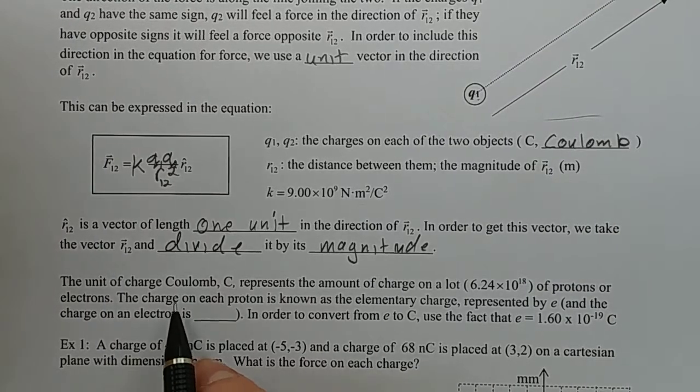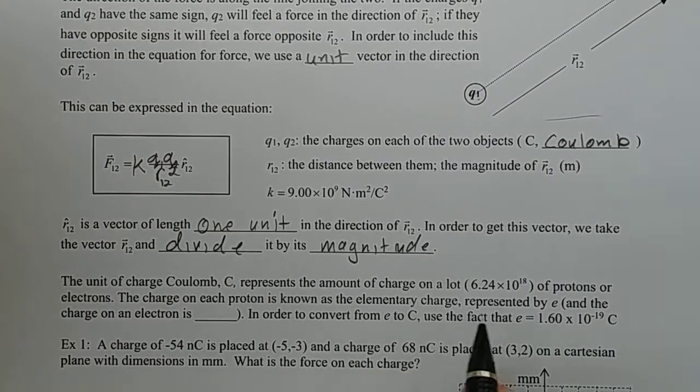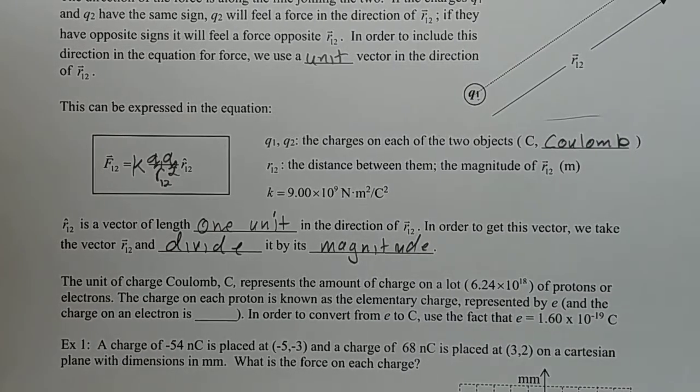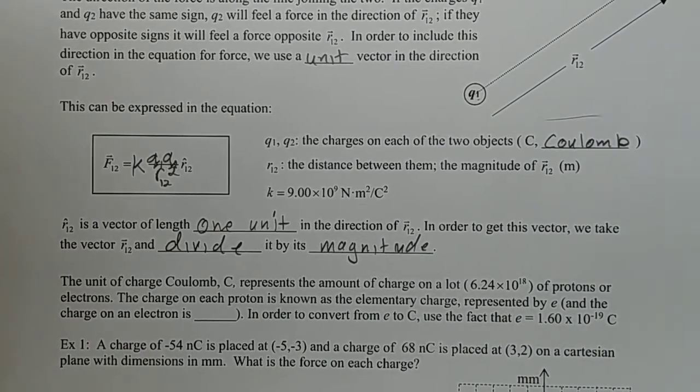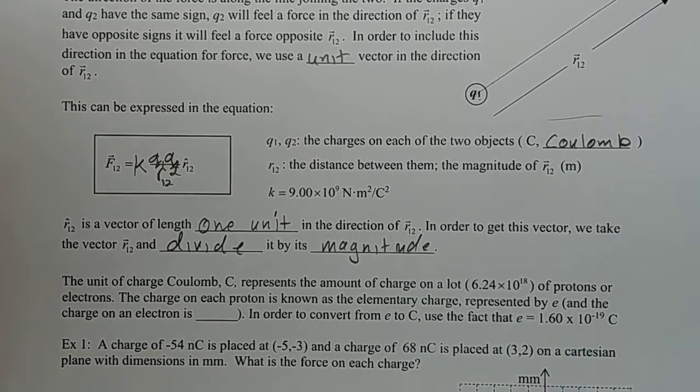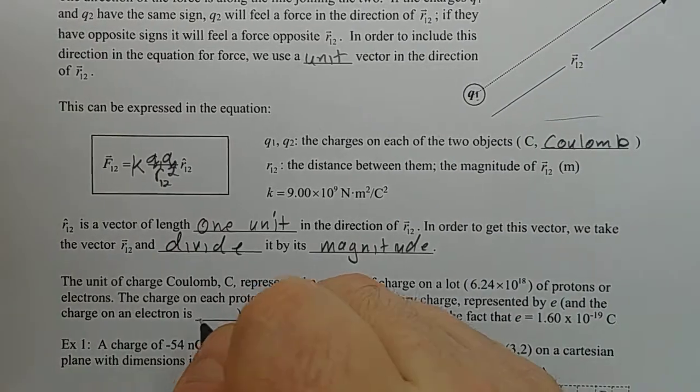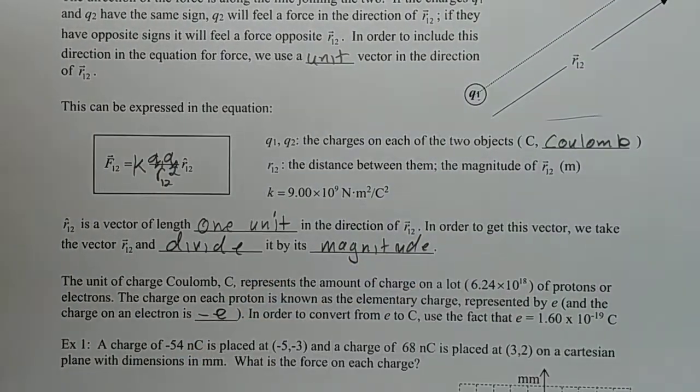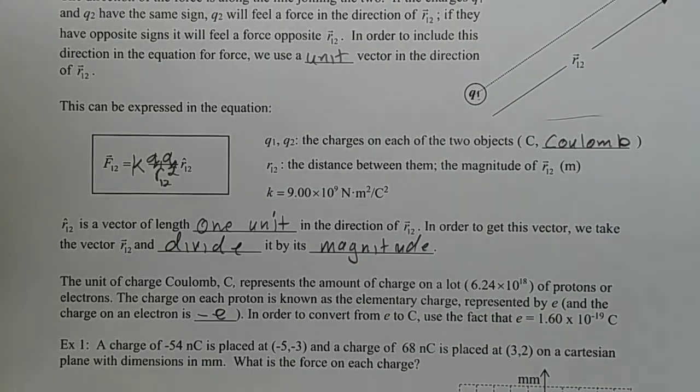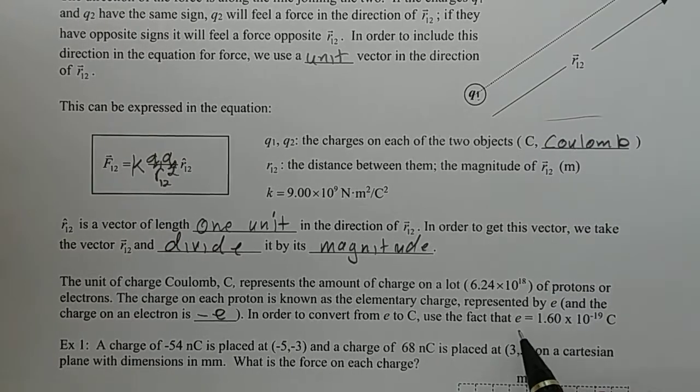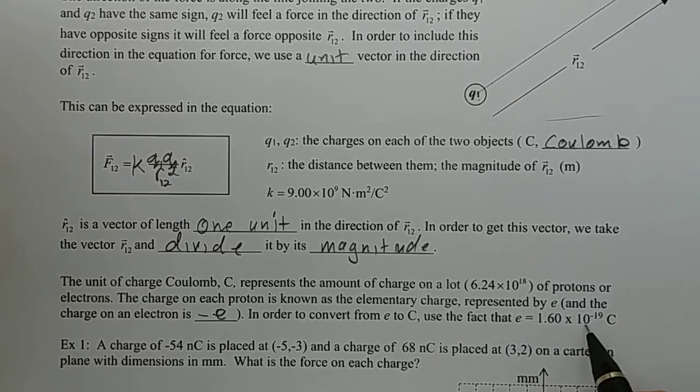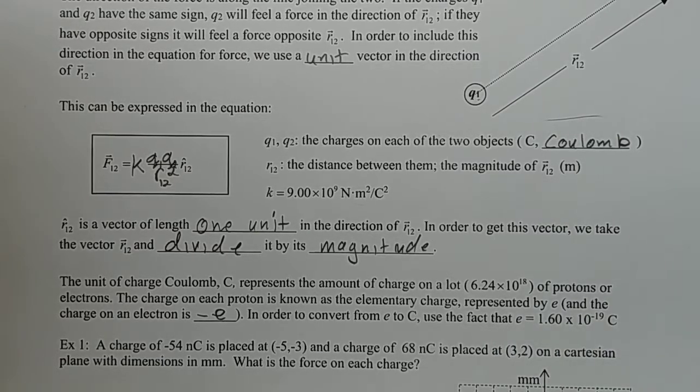The note I have here is that the unit of charge Coulomb, capital C, represents the amount of charge on a lot. There's the number I was looking for: 6.24 times 10 to the 18 protons or electrons. Remember we said before that amount is known as the elementary charge represented by E, with the charge on an electron being negative E. And so in order to convert from E to C, we can use the fact that the elementary charge is 1.6 times 10 to the negative 19 Coulomb.